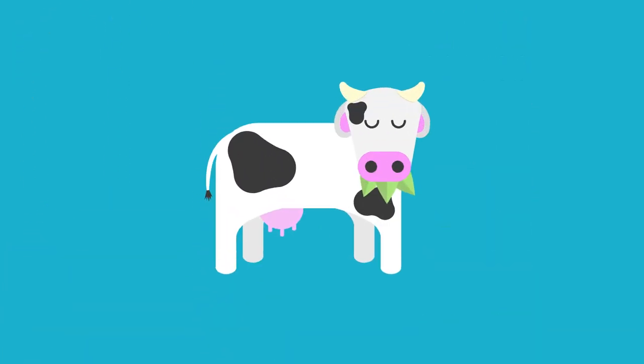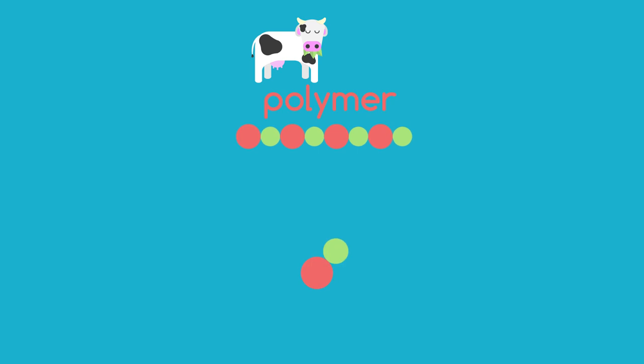Animals, on the other hand, get their molecules ready-made when they eat plants or other animals, but first they have to break the food polymers back into the small molecules. Do you know what this process is called?